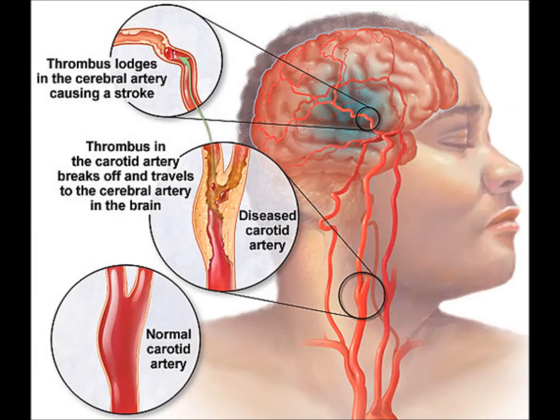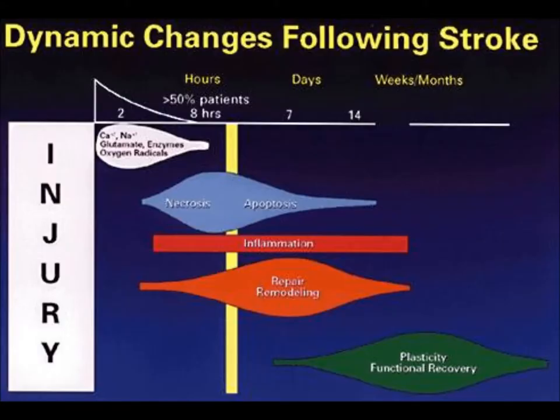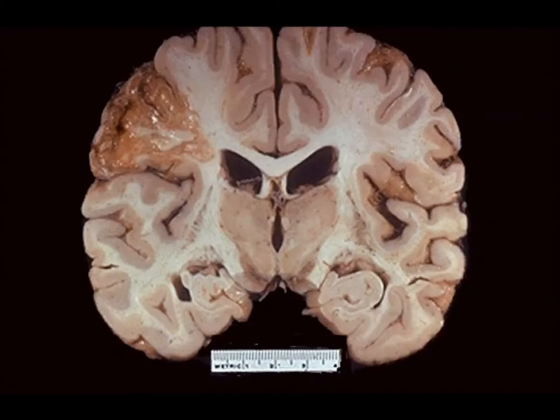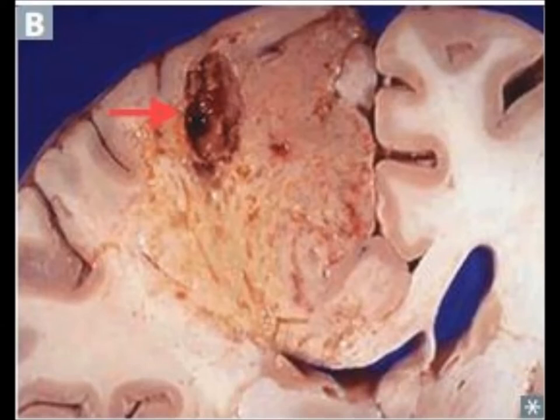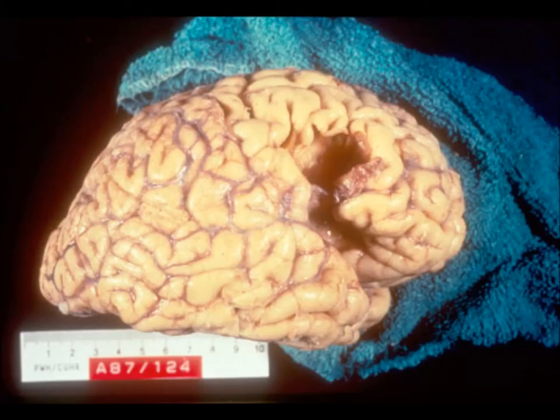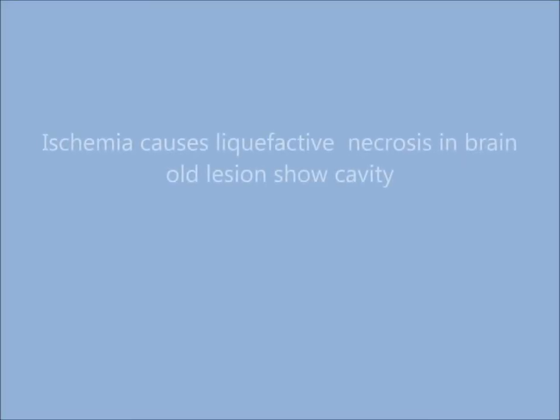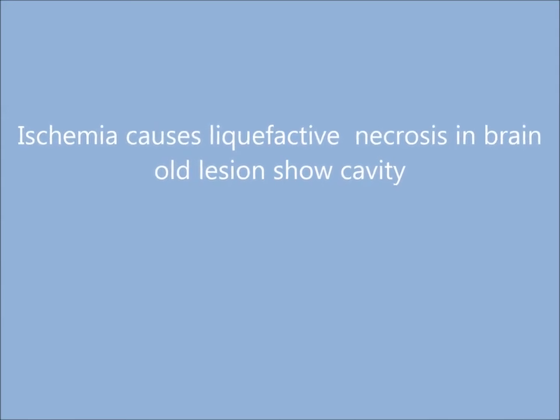Hypertension is a known cause of atherosclerosis, and thrombi lodged in the brain cause blockage of the arterial supply. It takes 12 hours to develop the ischemic changes in the brain. Here you can see a cavity on the hemisphere of the brain, and other specimens showing a cavity and surrounding edema. Ischemia causes liquefactive necrosis, which leaves behind a cavity, so old necrotic lesions show cavitation.